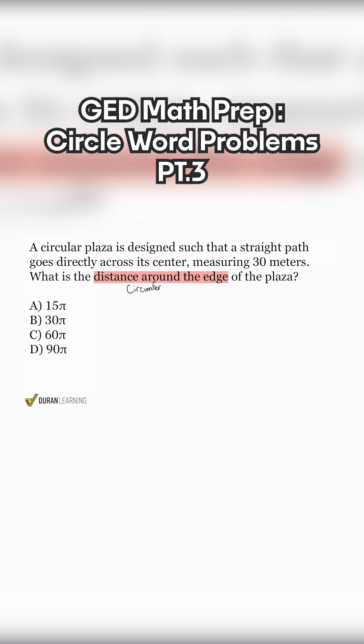So once we understand that, what we're going to do now is we're going to say, well, there's two formulas I can use. We can say that we have 2πr or we can use π times d. So let's read here.